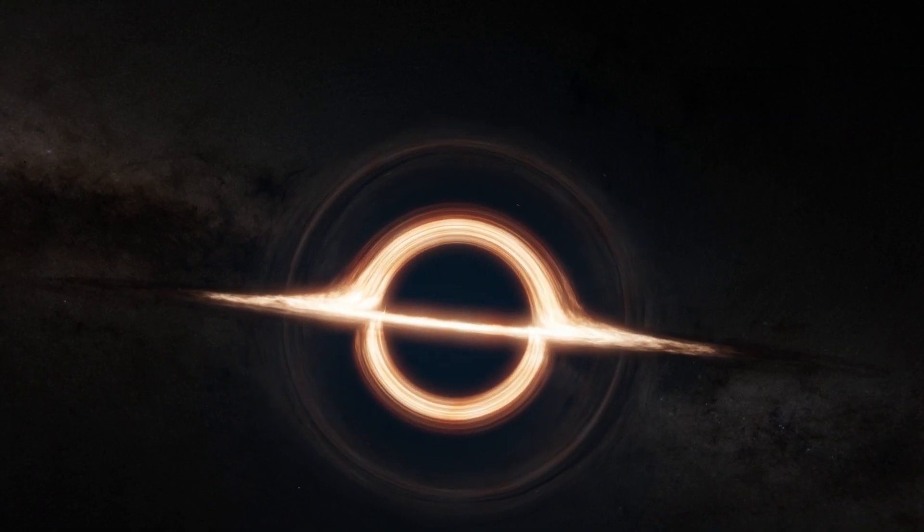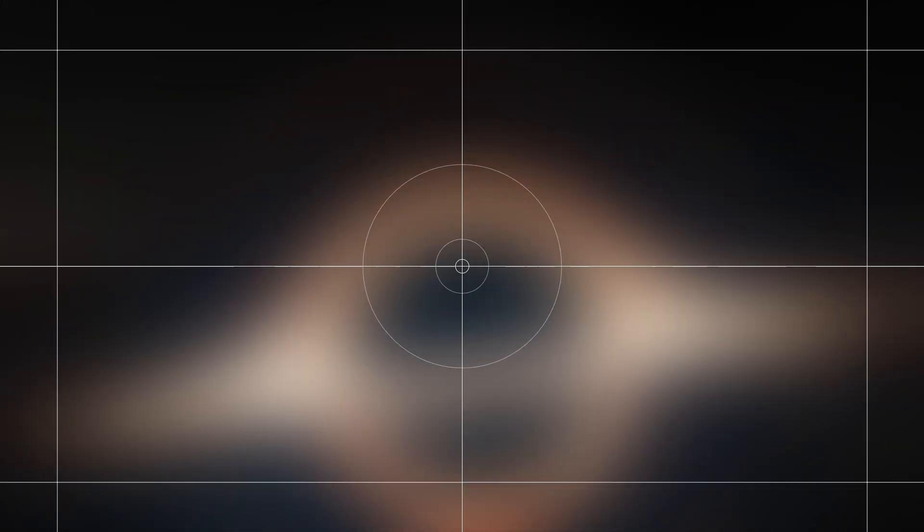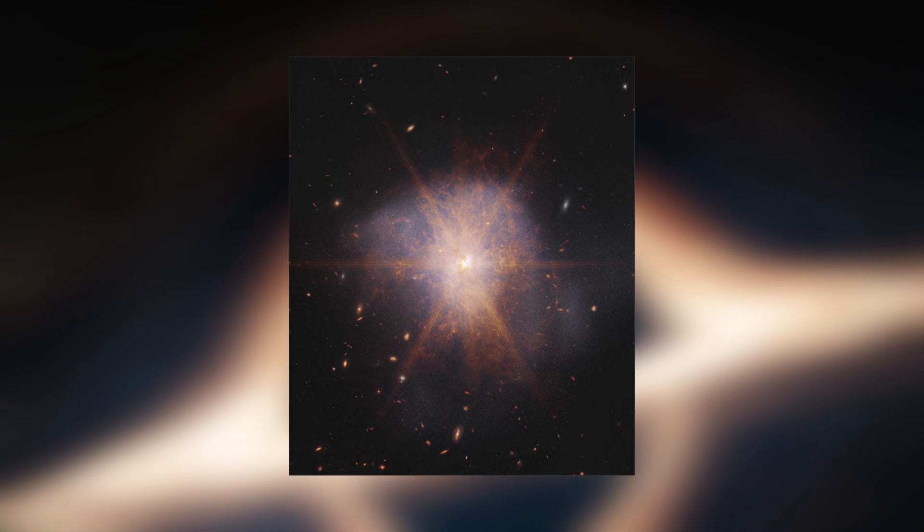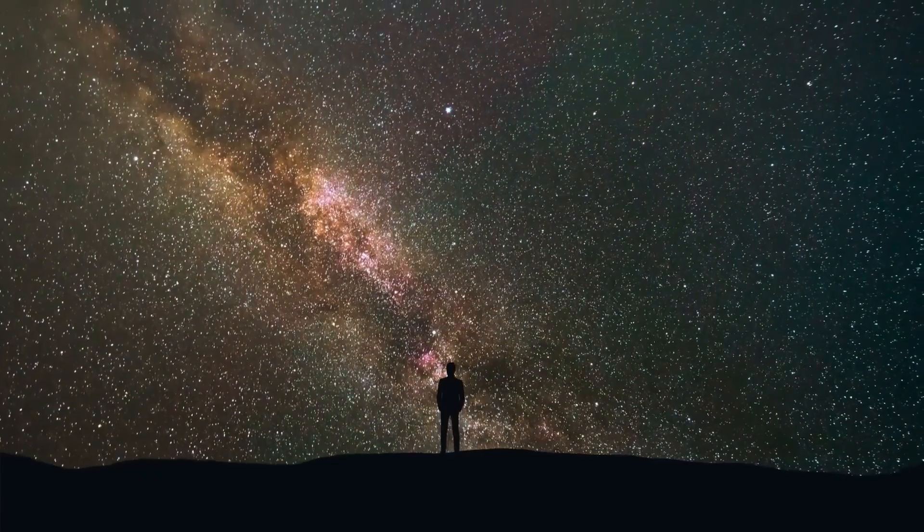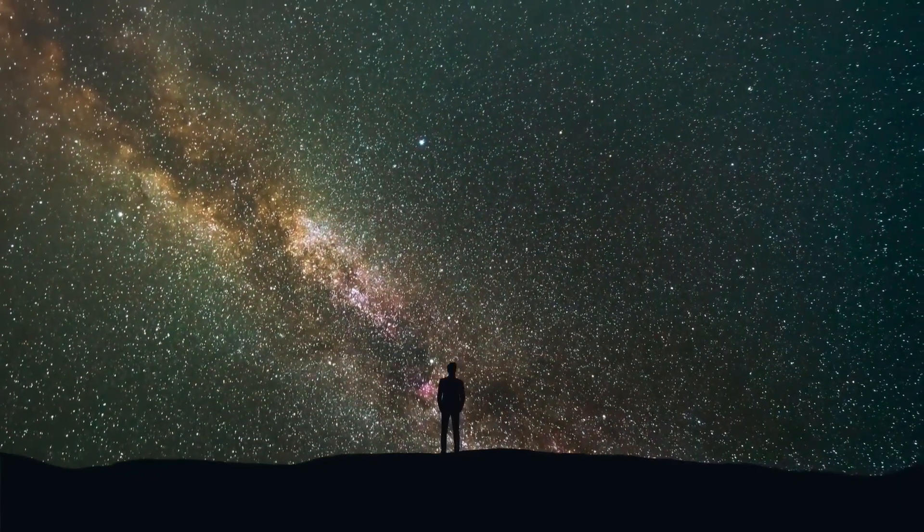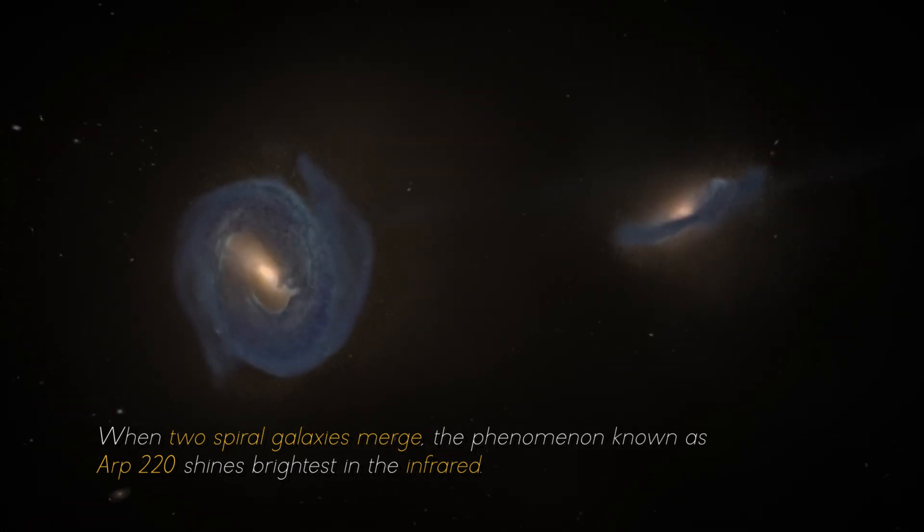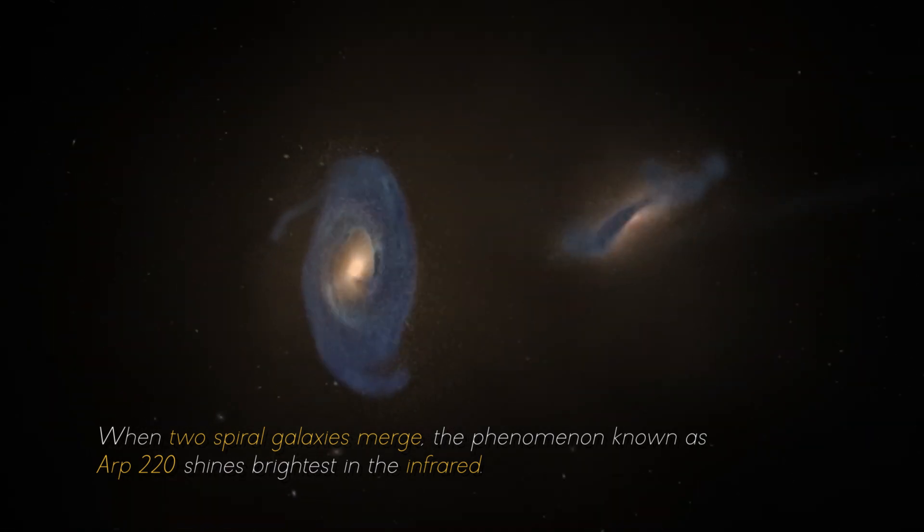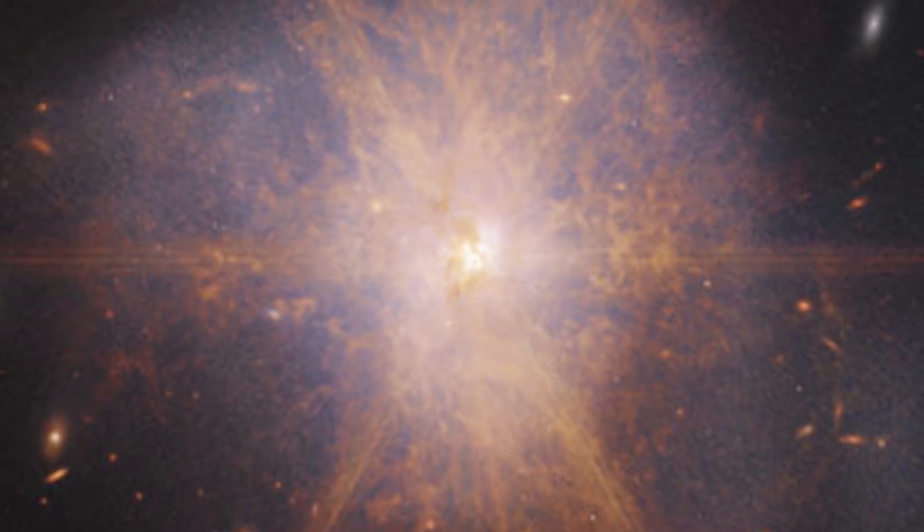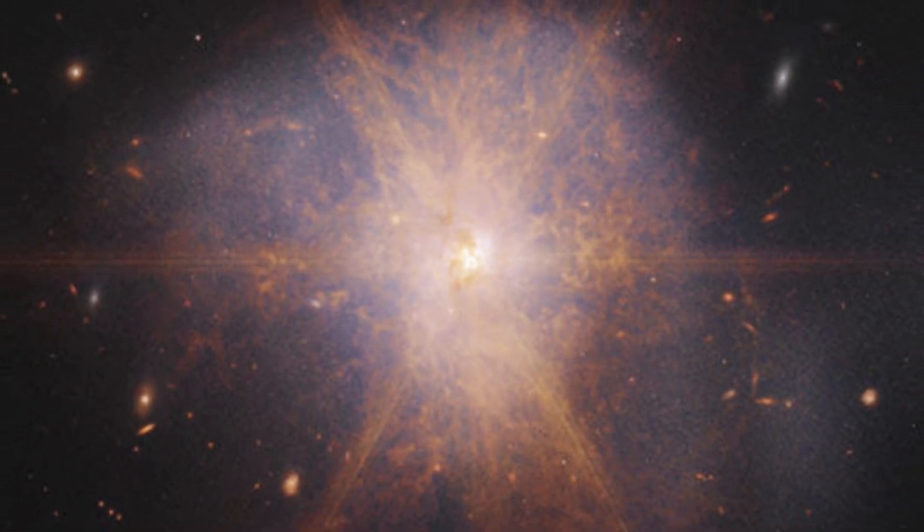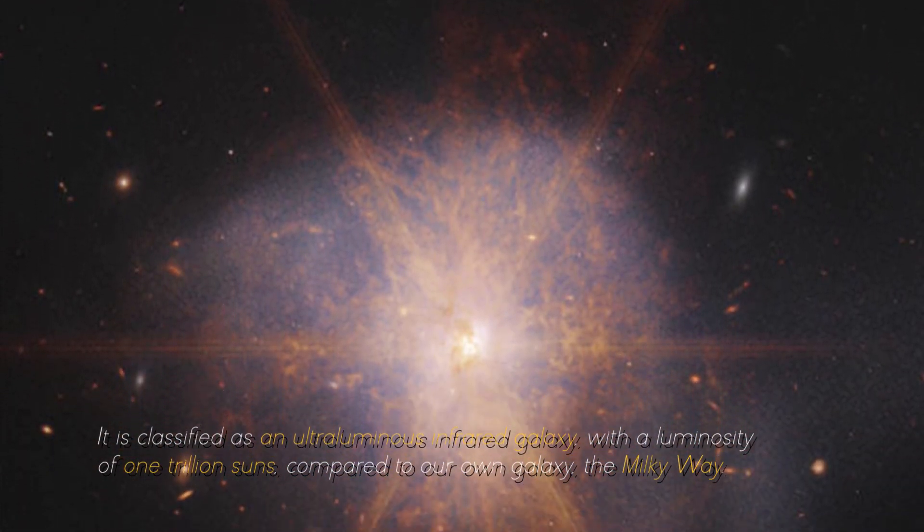But that's not all. NASA has made an exciting announcement about the galactic merger of ARP 220, which was captured by the James Webb Space Telescope. This impressive galactic merger can be seen shining among other galaxies in the night sky. When two spiral galaxies emerge, the phenomenon known as ARP 220 shines the brightest in the infrared, making it perfect for observation by the James Webb Space Telescope. It is classified as an ultra-luminous infrared galaxy.